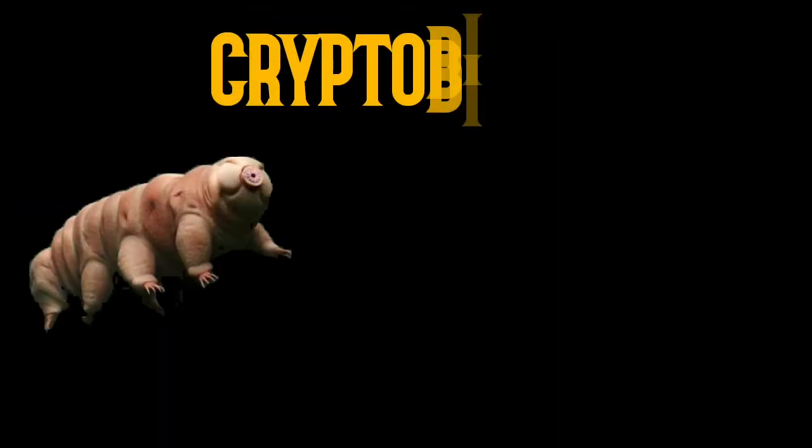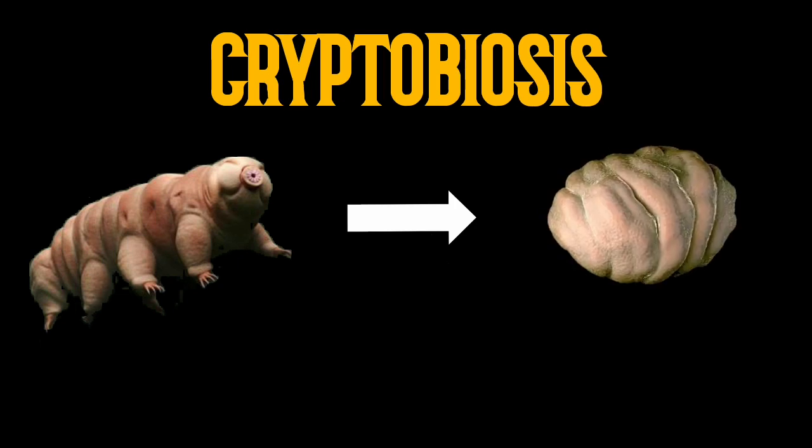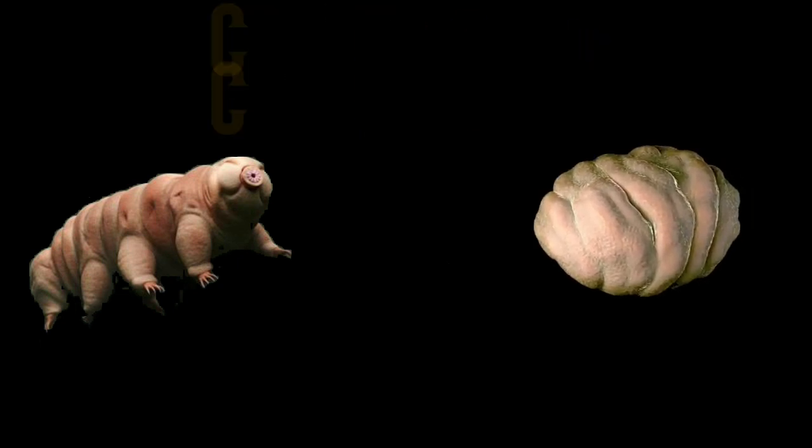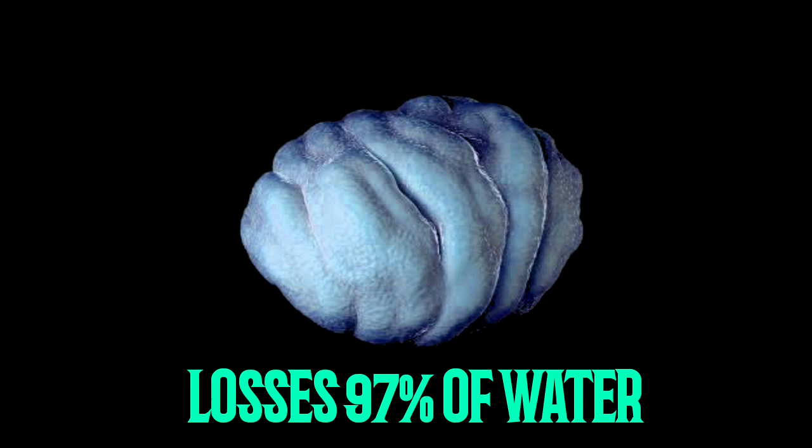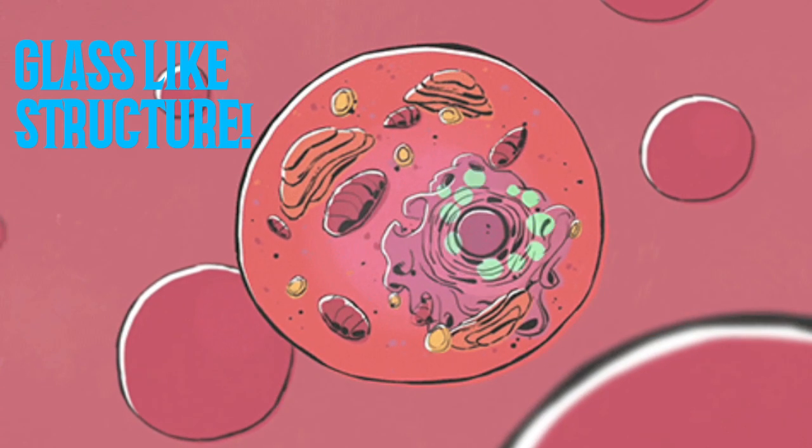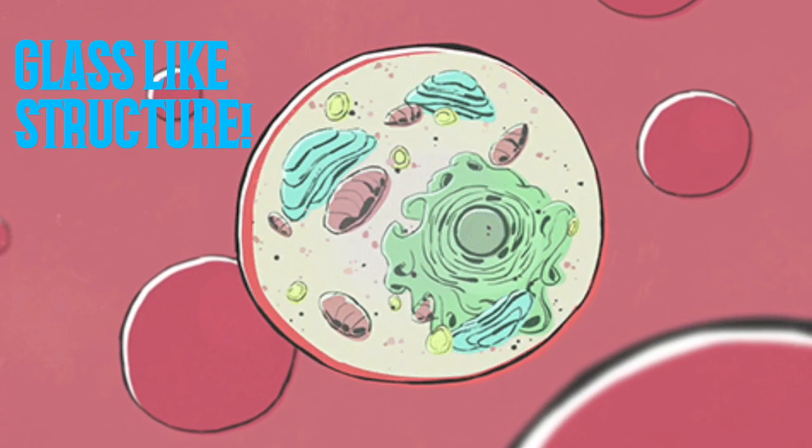They have a unique feature known as cryptobiosis that enables their survival in harsh conditions. In cryptobiosis, they lose 97% of their water and form a hard glass-like body.